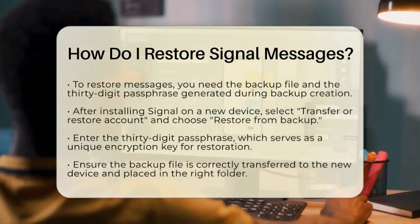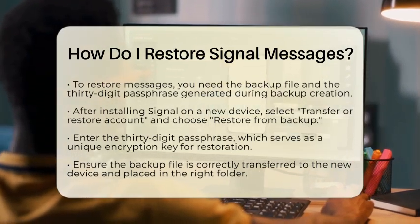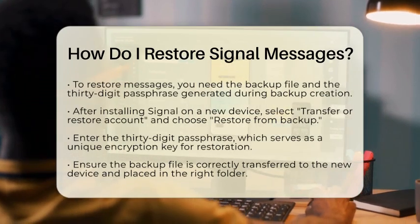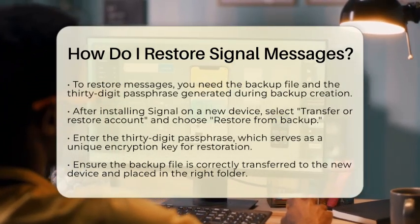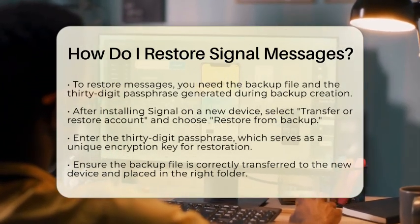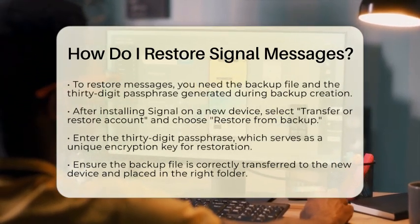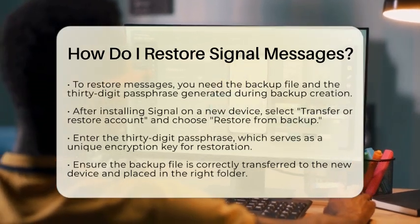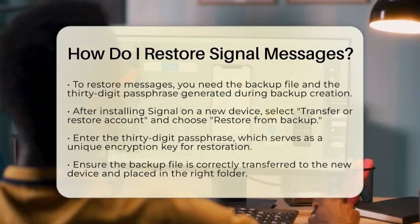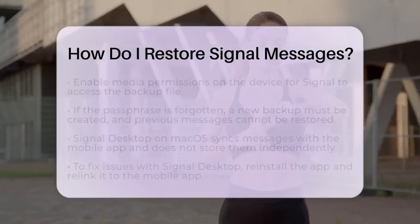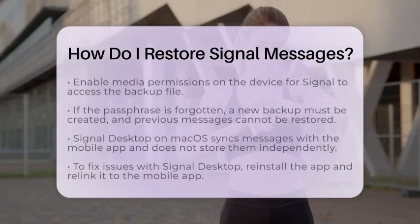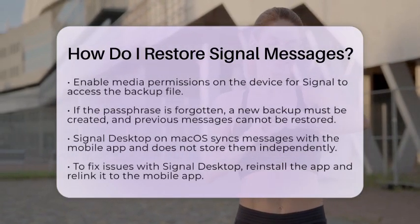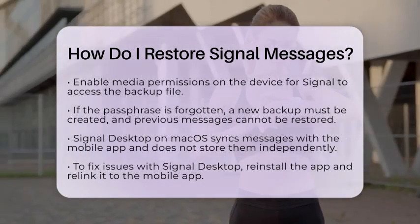If you are using Signal on a desktop with macOS, it is important to note that Signal desktop messages sync with your mobile device and do not store messages independently. If your Signal desktop on macOS fails to open or loses messages, you will need to reinstall the app and relink it to your primary mobile Signal app.